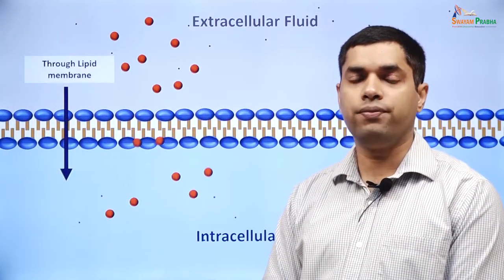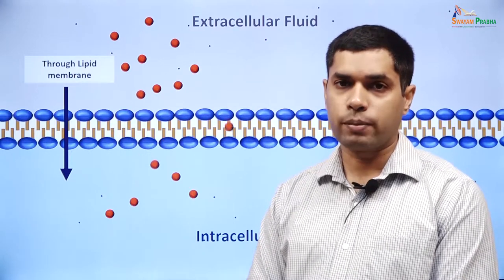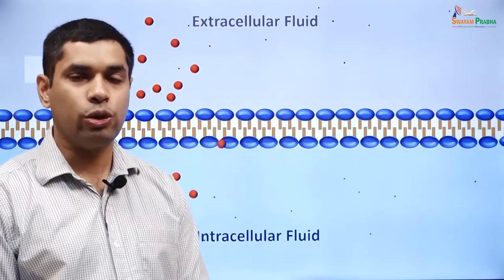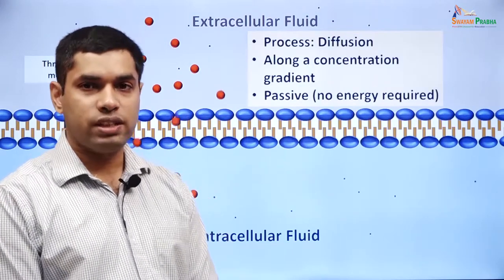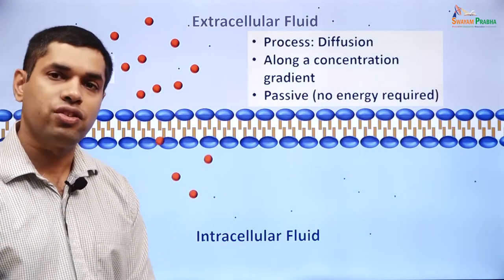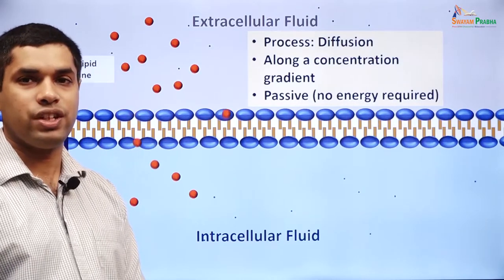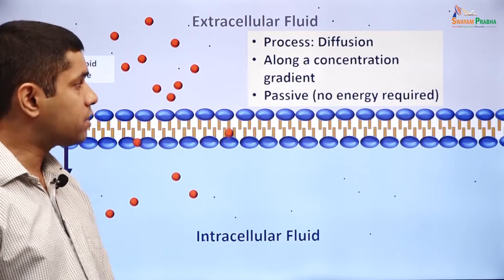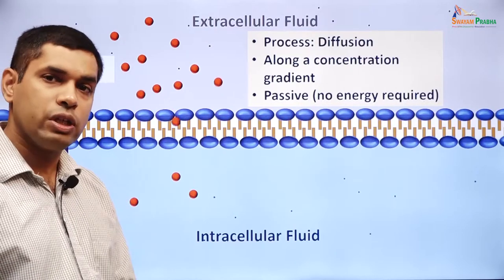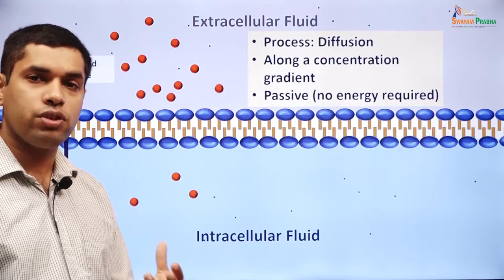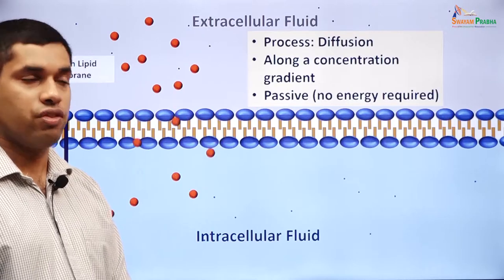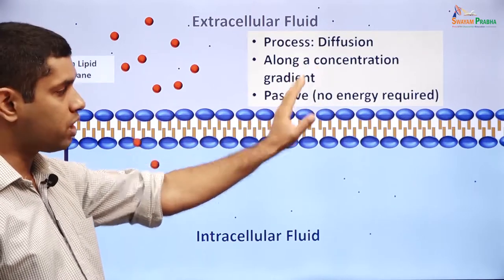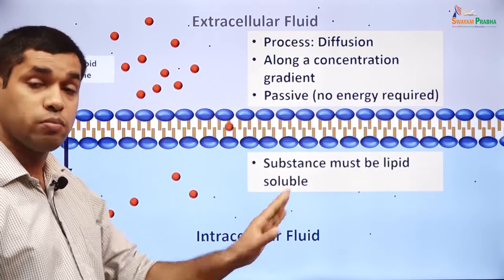Let us now look at diffusion that happens through the cell membrane. For diffusion to occur, the substance must be lipid soluble. This is a passive process — it occurs from a region of higher concentration to a region of lower concentration across the membrane. No external energy is required because the energy for diffusion is already present in the concentration gradient. So diffusion is a passive process that occurs along a concentration gradient from higher to lower concentration.